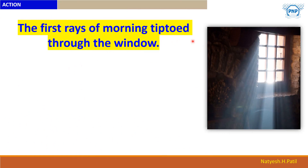Another example: 'The first rays of morning tiptoed through the window.' You can see the sun rays or morning light coming inside through a window. Tiptoe means walking very quietly and carefully. Can the sun rays really tiptoe? Can they really walk? Walking is our quality, which has been given to the sun rays here.